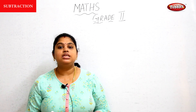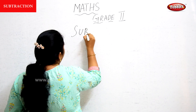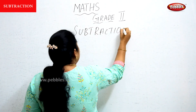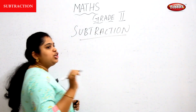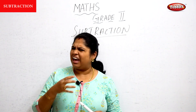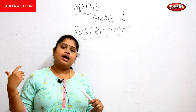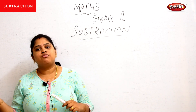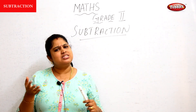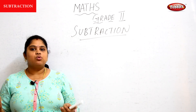So next we are going to see about subtraction. Addition is used to add the total number of anything. For example, if your brother has five chocolates and you have five chocolates, how many chocolates do you have in total? Addition means nothing but counting the total number.